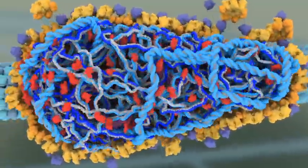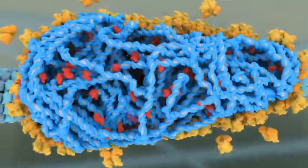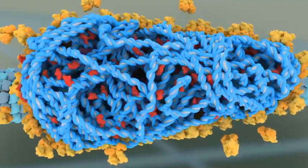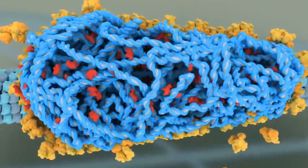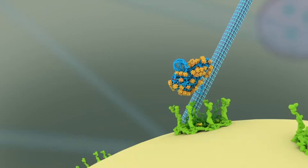Multiple RTs work simultaneously to carry out this task, resulting in a complete double-stranded DNA copy of the viral genome, and meanwhile, the capsid shell begins to break apart.